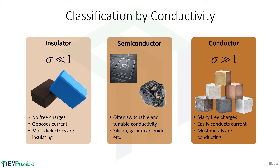In between are semiconductors, and they can really switch between being an insulator and a conductor — that's how we make things like transistors and diodes. Silicon is by far the most common type of semiconductor, making all of our computer chips, but there are others like gallium arsenide and many more.